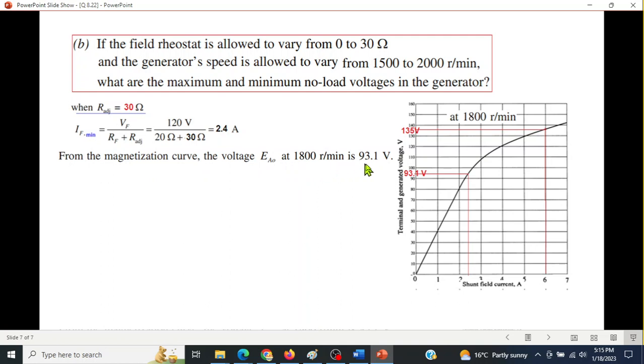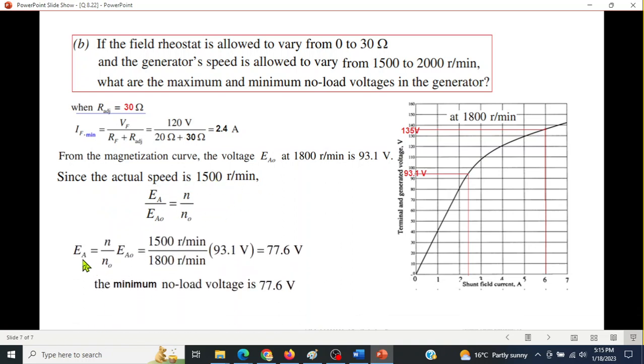So Ea0, we found 93.1 at 1800 rpm. Since the actual speed is 1500 rpm, we will use this formula. And from here, we just plug in the value, 1500 here, 1800 from the graph, this is from the graph. So the actual voltage is 77.6 volts. So this is the minimum no load voltage, or the minimum no load terminal voltage.